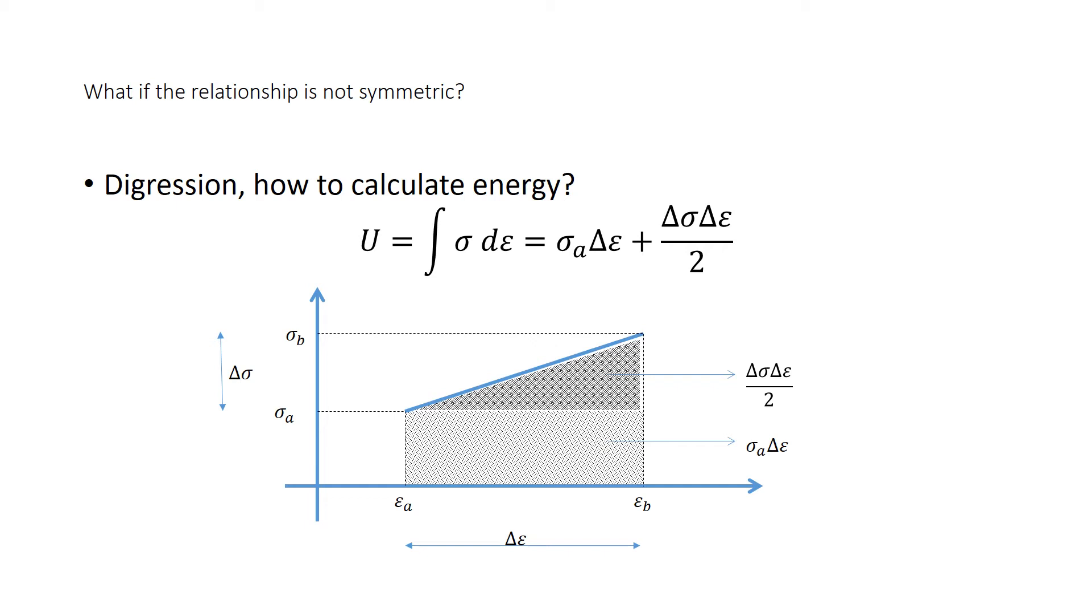We're going to digress for a minute to explain how to calculate the energy associated with the deformation of a linear elastic material. When a stress, for example, sigma1 or sigma22, increases from a value sigmaa to sigmab, and if the corresponding strain, epsilon1, increases from epsilona to epsilonb, the energy is equal to the area under the curve. The area under the curve is equal to sigmaa multiplied by delta epsilon plus delta sigma multiplied by delta epsilon over 2.